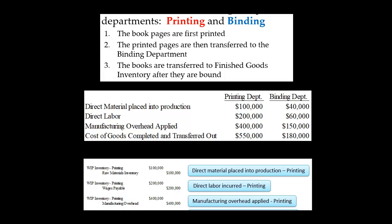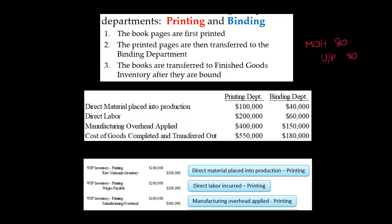I talked about this when we did job order costing. The manufacturing overhead account is a temporary account. Whenever we have actual manufacturing overhead — which is distinct from applied manufacturing overhead, applied using a predetermined overhead rate using budgeted overhead — when we have actual manufacturing overhead, we're going to debit manufacturing overhead. For example, if we got a utility bill for $80, we would debit manufacturing overhead for $80, and then credit utility payable for $80. In this example, we are applying manufacturing overhead using our predetermined overhead rate, so we are going to credit the manufacturing overhead account. That is similar to job order costing.